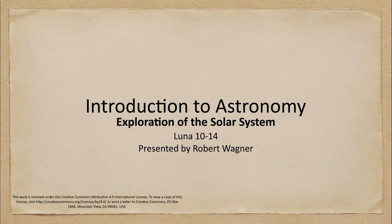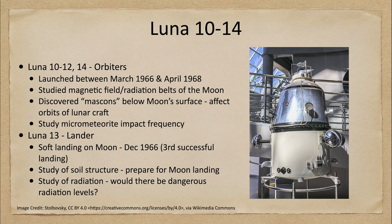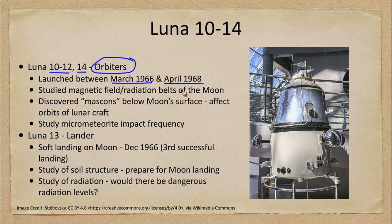Greetings and welcome to the introduction to astronomy. In this week's exploration of the solar system, we are going to talk about some of the Luna spacecraft series, specifically Luna 10 through 14. These were intended to explore the moon, and Lunas 10, 11, 12, and 14 were all orbiters, meaning they were orbiting the moon, launched between March of 1966 and April of 1968.